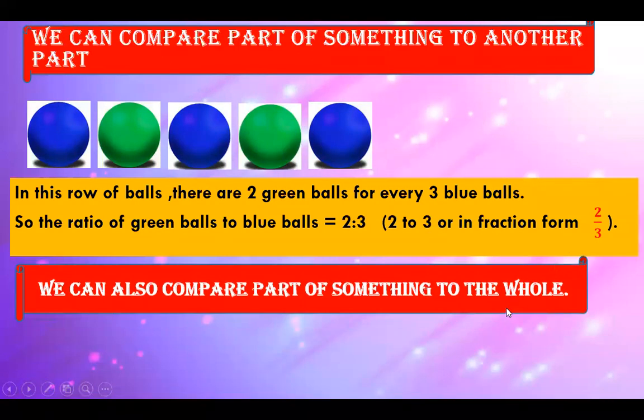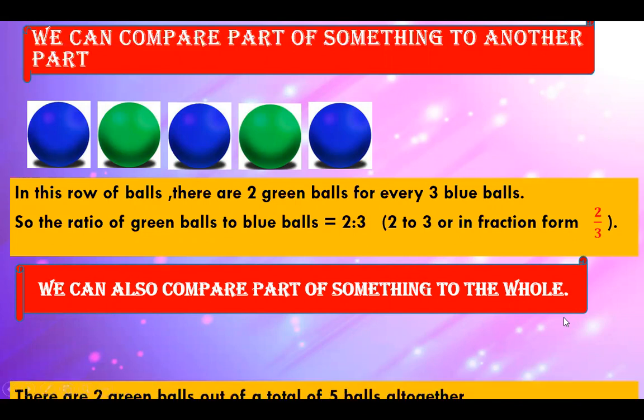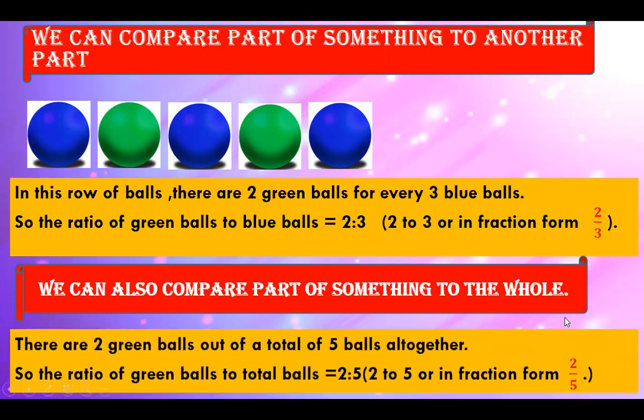We can also compare part of something to the whole. There are two green balls out of a total of five balls altogether. So, the ratio of green balls to total balls equals 2 is to 5, or 2 to 5, or in fraction form it is 2 by 5.